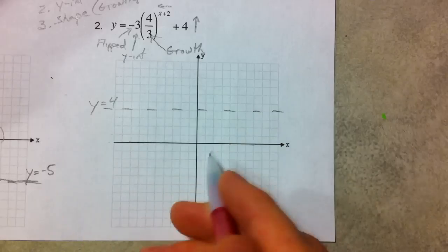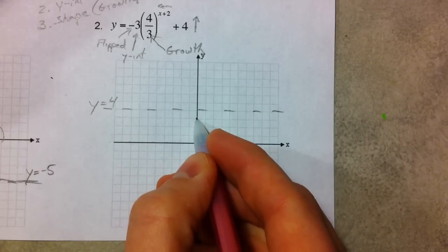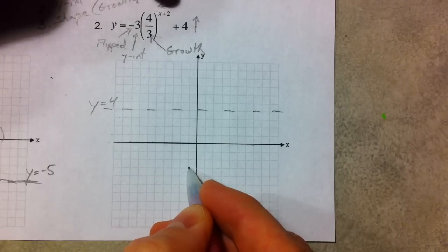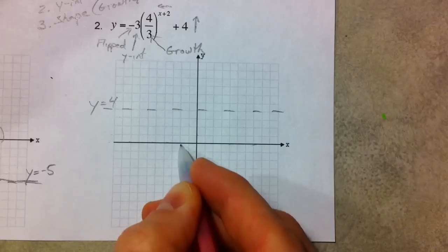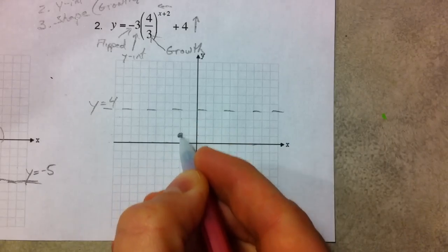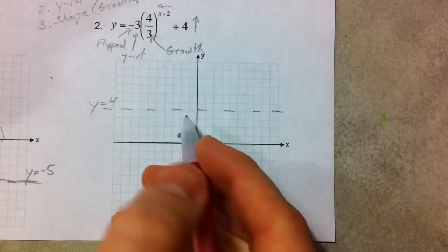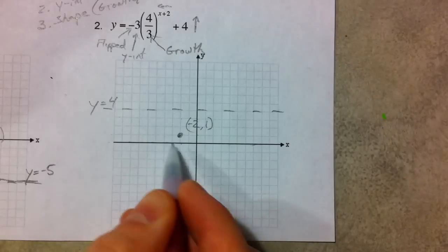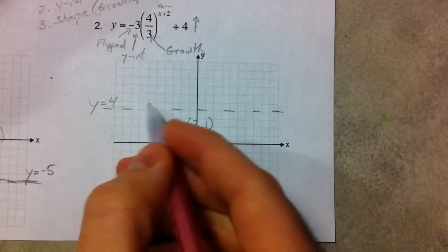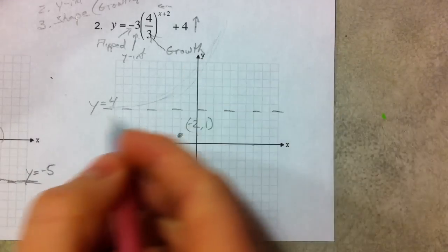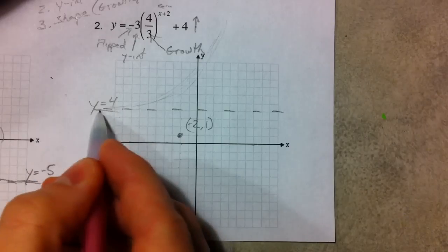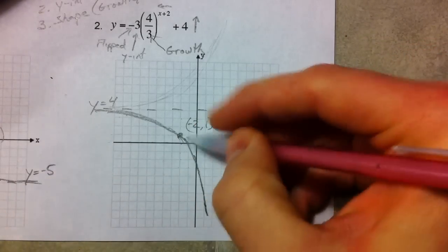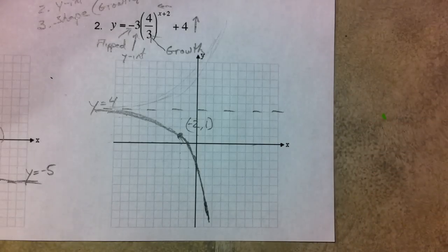The y-intercept was at three, but because it's reflected it flips down to negative three. We then shift it left two and up four, landing at the point negative two comma one — notice we're still three away from the asymptote. The shape was growth, but we reflect it, so the curve is flipped over. There you have the basic transformations of exponential functions.